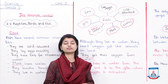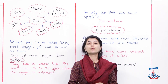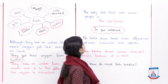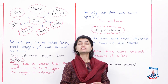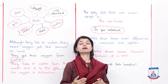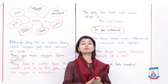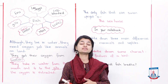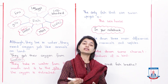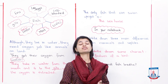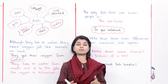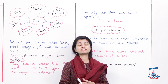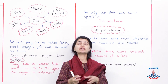An interesting fact about fish: the only fish that can swim upright is the seahorse. Another fascinating thing is that the seahorse also falls into the category of fish. And with that, we have covered the unit about fish and its key characteristics.